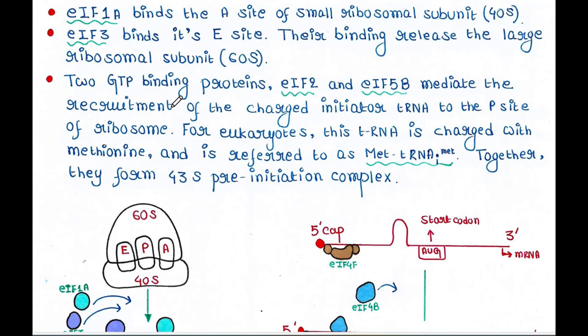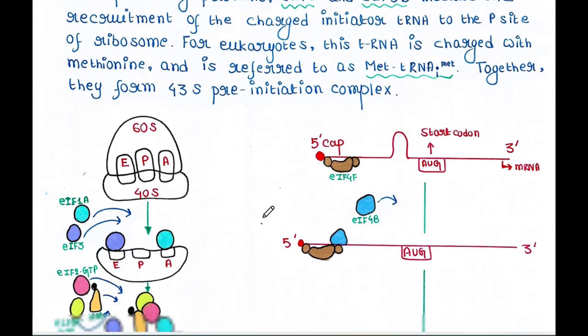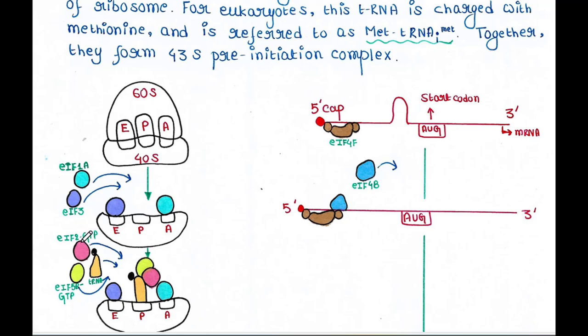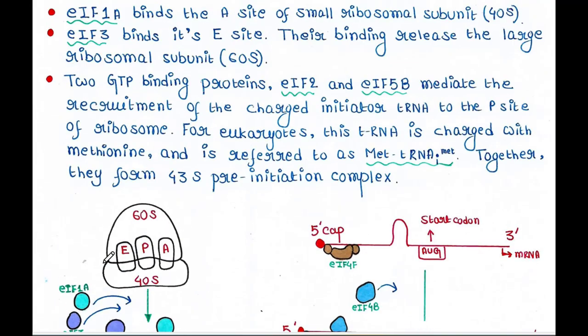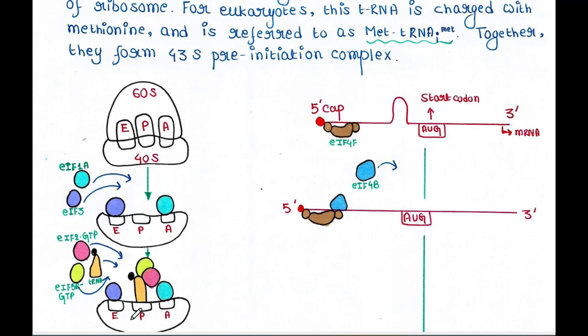Now two GTP binding proteins will come: eIF2 and eIF5B. These two are GTP binding proteins. They will also come here. Why? Actually, they mediate the recruitment of the charged initiator tRNA to the P site. So in this P site, the charged initiator tRNA should come.